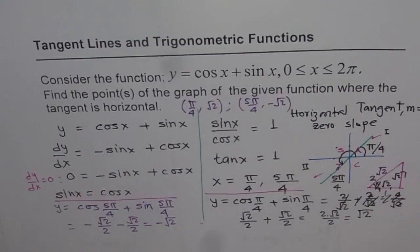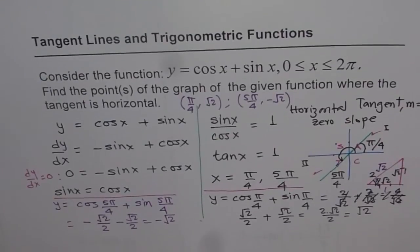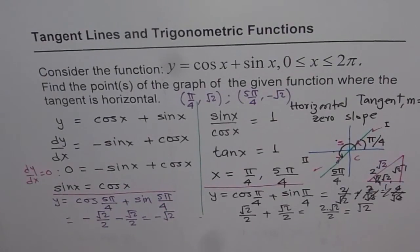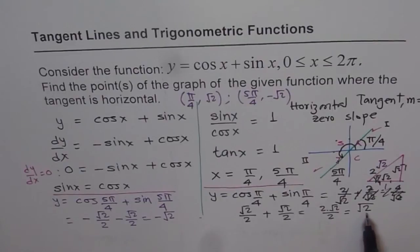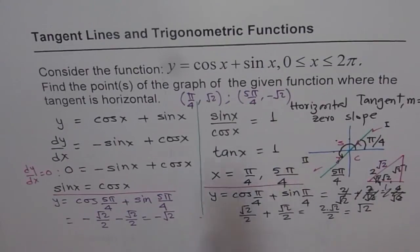So as an exercise, what you can do here is you can find equation of both the tangents, which are horizontal. The horizontal tangent line equation should be the y value. So y equals square root 2, and y equals minus square root 2 are the two equations of the tangent line, which you should get. Thank you.